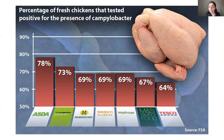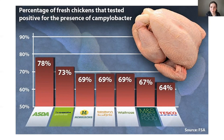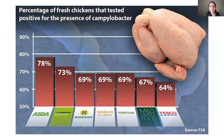Here we have statistics from the FSA on the percentage of chicken positive for Campylobacter within UK supermarkets. It's quite high — UK supermarkets range from around 60 to 80 percent of samples tested actually testing positive for Campylobacter. As well as this high percentage, there are often also major foodborne outbreaks of Campylobacter.